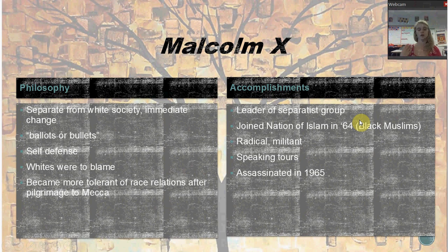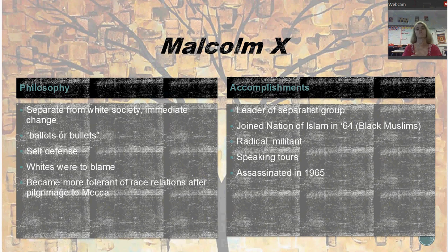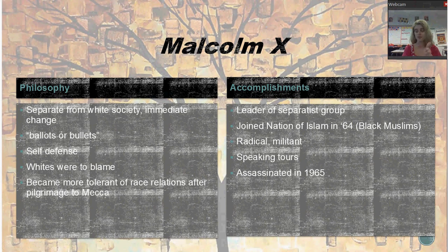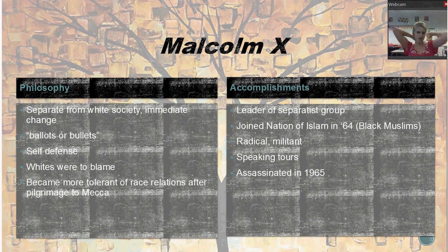The next person is Malcolm X, who is often thought of as much more radical — the opposite of Dr. King. He did not believe that African Americans should try to integrate into white society; he was actually pro-segregation and believed they should separate from white society. However, he did believe in immediate change for African Americans, and if that change had to come in the form of violence, that was something he was okay with — framing it as self-defense. He really blamed the white population for what was happening in the country. A lot of his speeches were intense; he referred to the 'white devil' quite a lot.